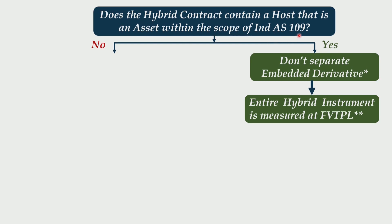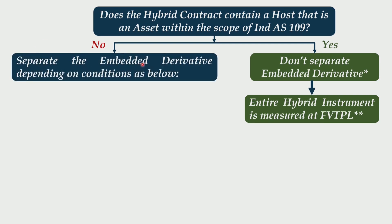But what if the host contract is not a financial asset? That means the answer to this question comes as no. Then the standard requires separating the embedded derivative depending upon the conditions as mentioned below. These are the conditions that we have yet to discuss. If you can see in your notes, you just ended up writing those three conditions.